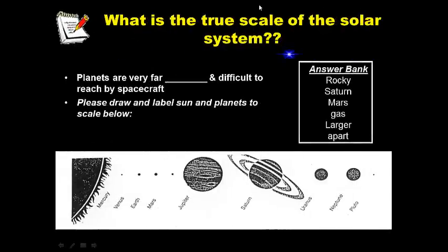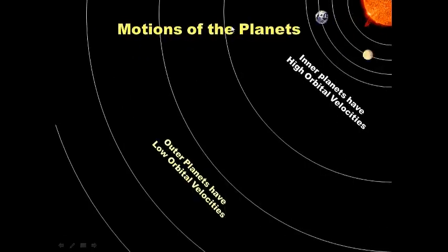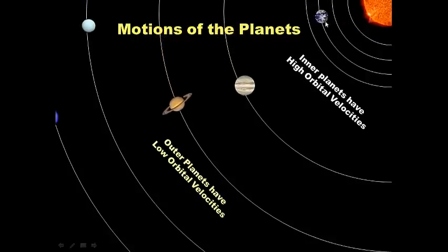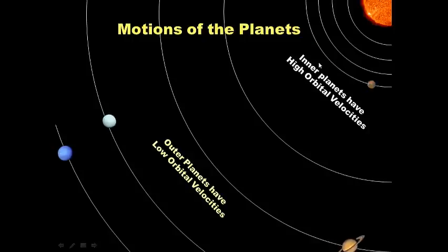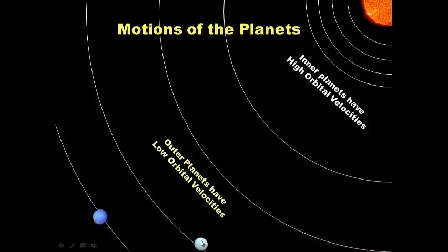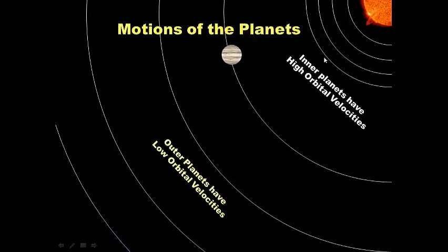Once again, here are your questions — read them and fill in the answer bank using the correct words. Pause the video to write this down. Now, the motions of the planets: you might notice the inner planets orbit fast — we say they have high orbital velocities. The outer planets have low orbital velocities, meaning they orbit the Sun very slowly.